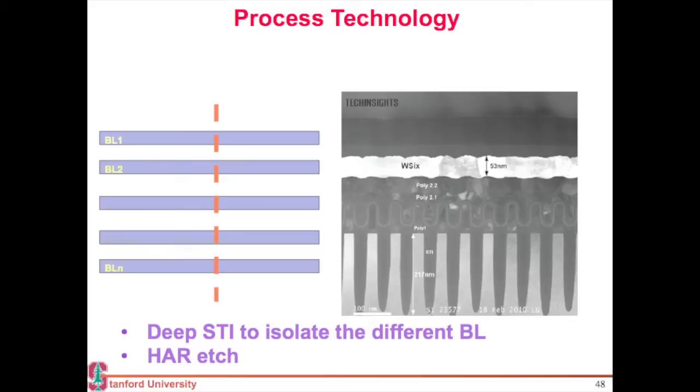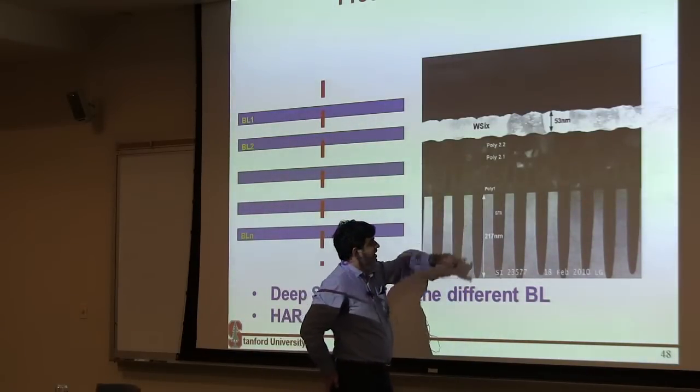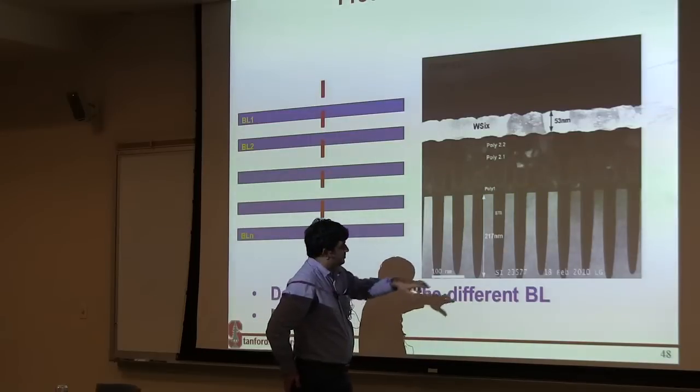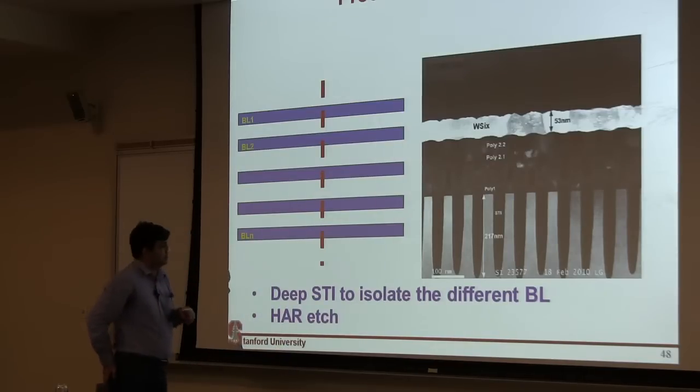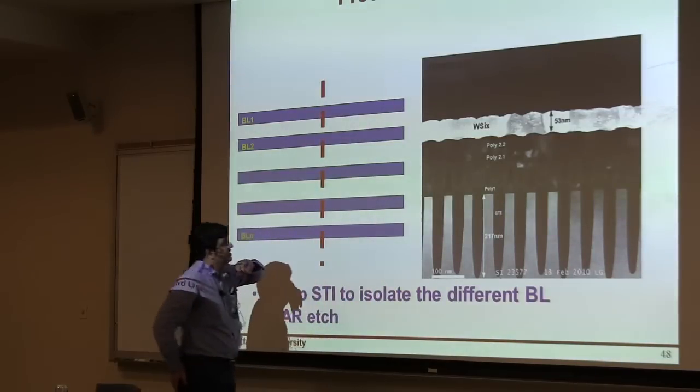Let's look at a few of these cross sections. This cross section I already showed you—taken along this direction. If you have these multiple bit lines and take a cross section like this, what you see is these bit lines, and they are separated by this very high aspect ratio STI etch. So this is a very high aspect ratio structure that you need to etch. Then you also need to fill it. That's what separates these different bit lines. On top of each bit line, you can see a cell over here. This is where your cell is located.